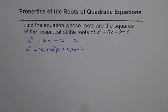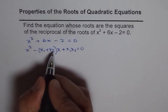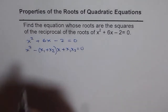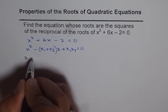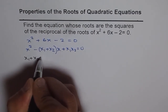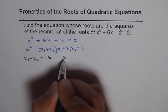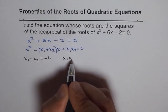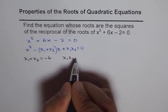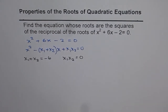Now if we compare, we get that x1 + x2 = -6. The sum of the two roots is -6 and the product of the two roots is -2. So that is what is given to us.